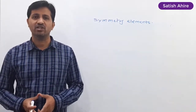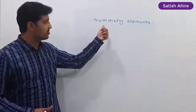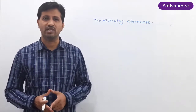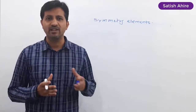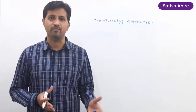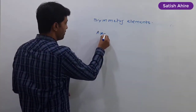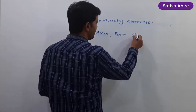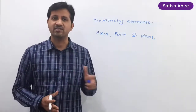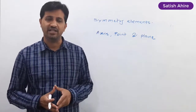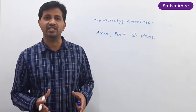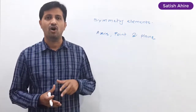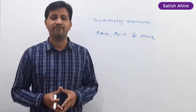Hello friends. In today's lecture we are going to learn symmetry elements. A symmetry element is a geometrical entity that shows the presence of symmetry within a molecule. It may be an axis, a point, or a plane — always remember, symmetry elements are geometrical entities related to the geometry of the molecule, involving either axis, point, plane, or a combination of these three.